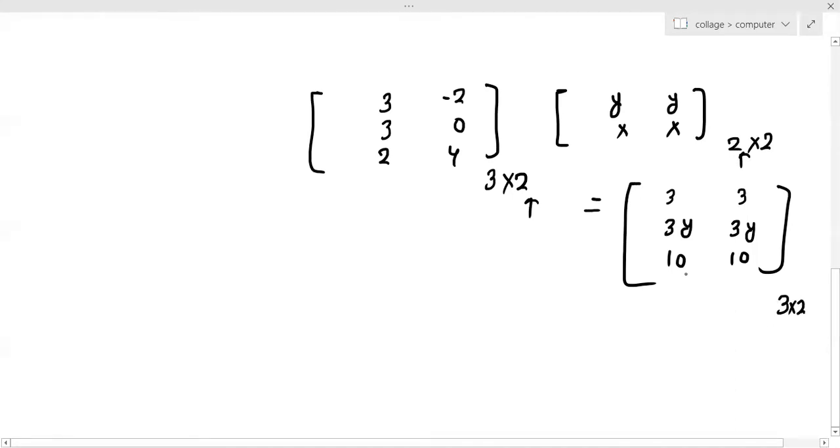This is the same element, and now the order is 3 cross 2. It is the right multiplication and now you check the corresponding elements to equate x and y values. As we do it here, we will multiply and 3y minus 2x will come. Then, again, 3y minus 2x will come.